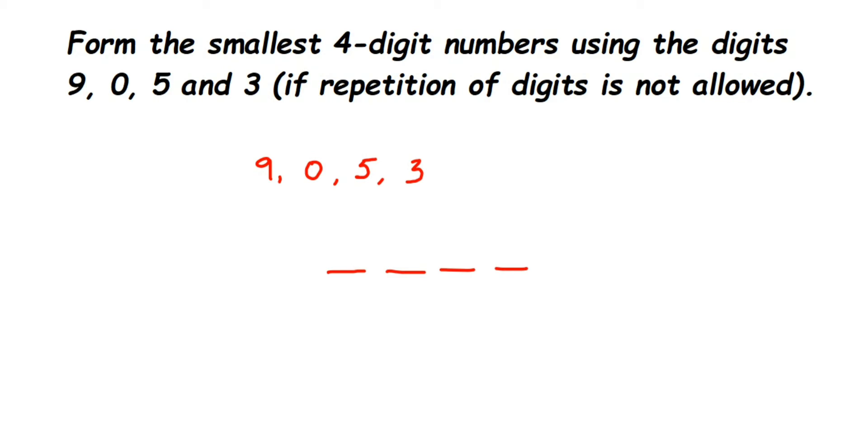We're going to start with the smallest number. If we have 9, 0, 5, 3, what is the smallest number? Zero is the smallest number, right? So I will write down zero.